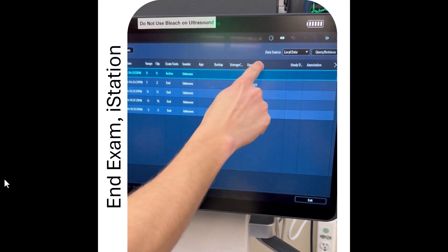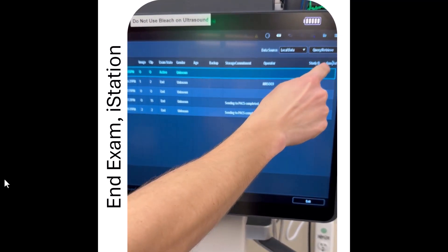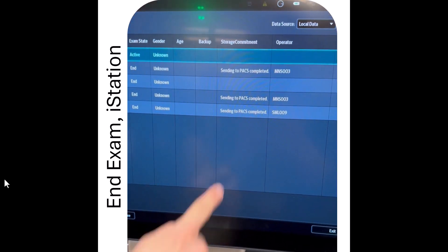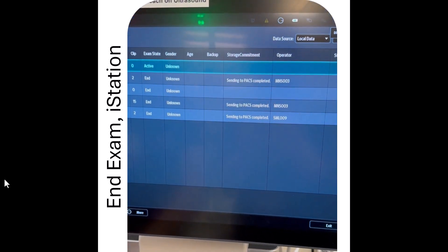You're going to widen out this storage complete icon here, and it'll say sending to PACS completed once the exam has been pushed to QPath. While the machine says sending to PACS completed, it's important to note that it's not actually sending the image to the patient's PACS. It's sending to QPath. So you still have to enter in QPath-E and push the image itself to PACS if you want it to go into the patient chart.